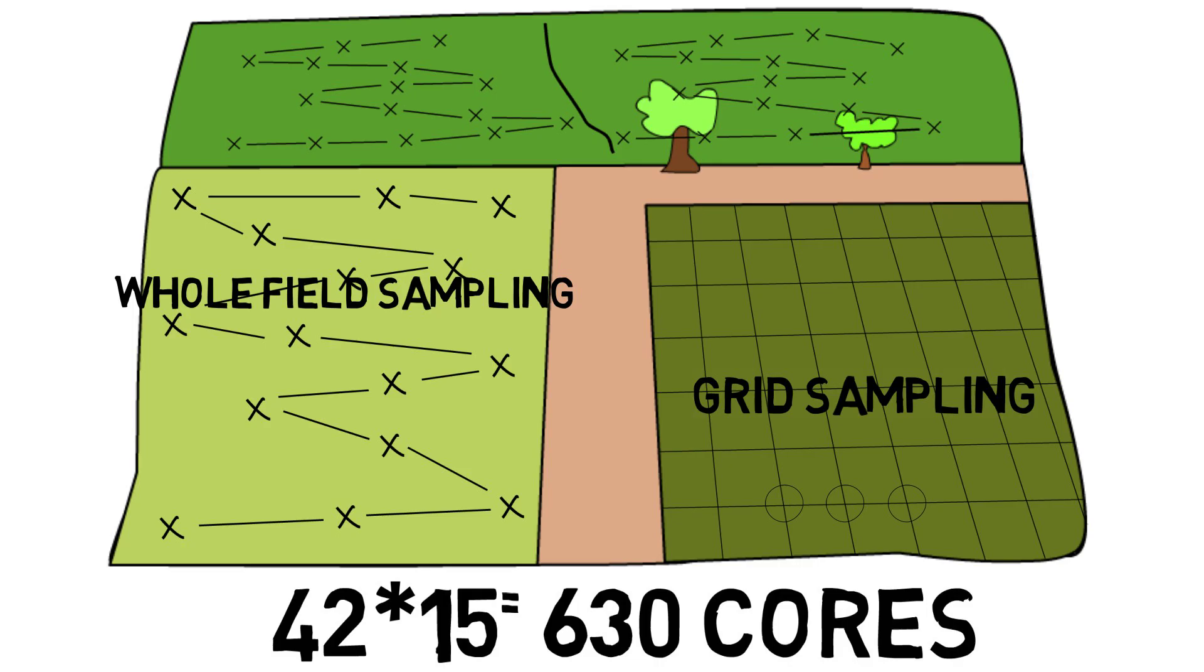Just in this example alone, you'll have 42 different composite samples, which would represent about 630 cores. So you can imagine how this would be very time-consuming and also very expensive when it comes time to have a lab analyze all of these soil samples.